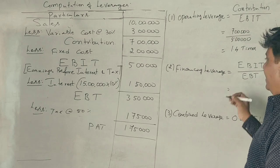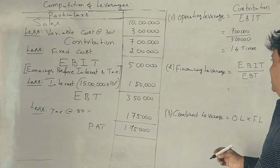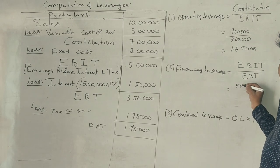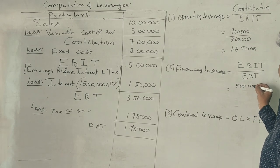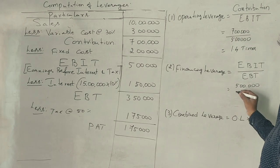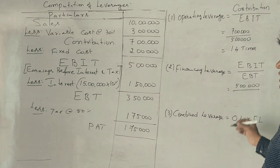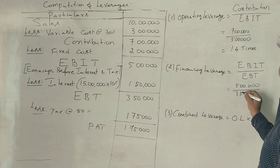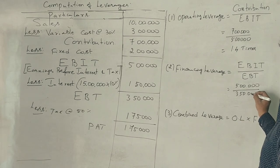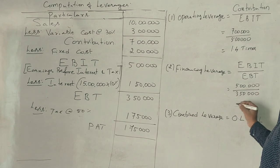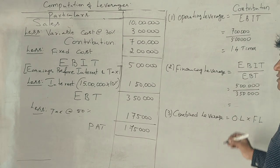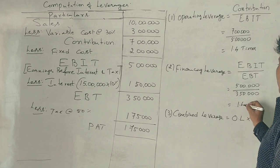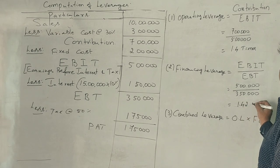For Financial Leverage: EBIT is 5 lakhs divided by EBT of 3 lakh 50,000, which gives 1.42 times.